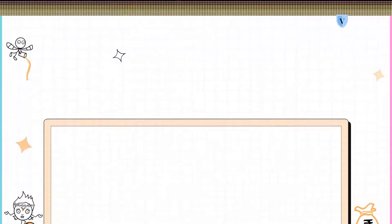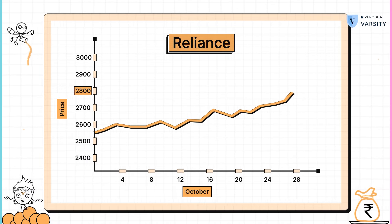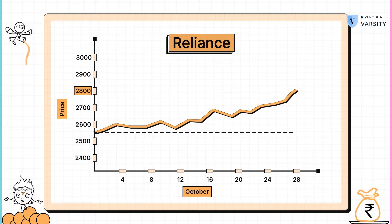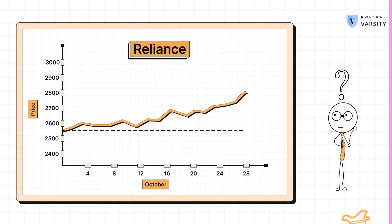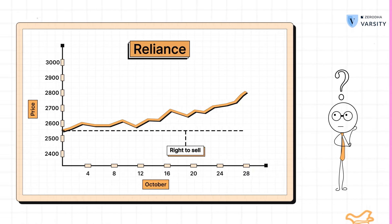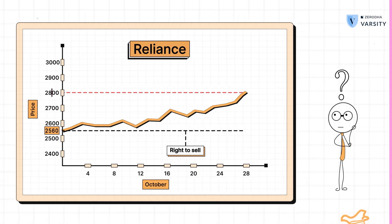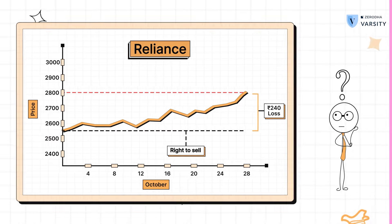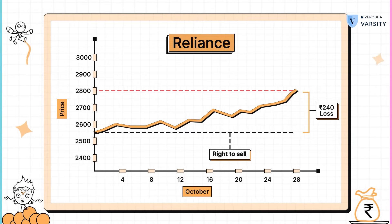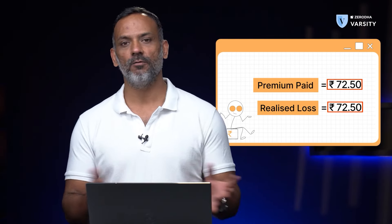Let's look at the second scenario now. Assume that the stock price of Reliance actually increases to maybe about 2800 on the expiry day. What do you think I as a put option buyer will do here? Does it make sense for me to exercise my right to sell Reliance at 2560, when in the open market I can actually sell it at 2800? Clearly, it doesn't make any sense. Therefore, I will forfeit my right to sell Reliance at 2560, which also means that I'll let go of the premium that I've paid and walk away from this situation.